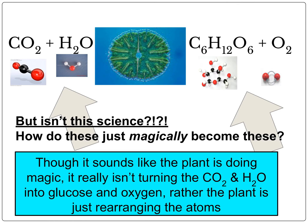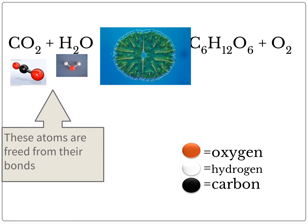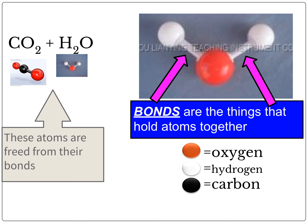Of course, the answer is no. Through photosynthesis, you start with CO2 and water. The atoms are then taken by the plant cell, and the atoms are rearranged into glucose and oxygen. These atoms — the CO2 and the water — are freed from their bonds. They are covalently bonded together. Here's a closer image of the bonds: this little piece between the hydrogen and the oxygen is supposed to represent that covalent bond.